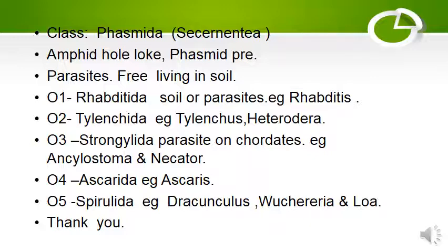Order 2 is Tylenchida; Heterodera is the example. Order 3 is Strongylida — parasites on chordates; Ancylostoma and Necator are the examples. Order 4 is Ascarida; Ascaris is the example. Order 5 is Spirurida; Dracunculus, Wuchereria, and Loa are the examples. Thank you.